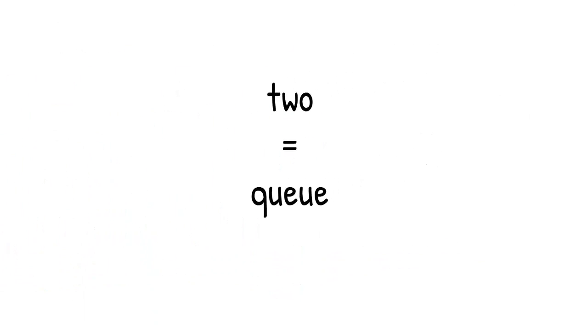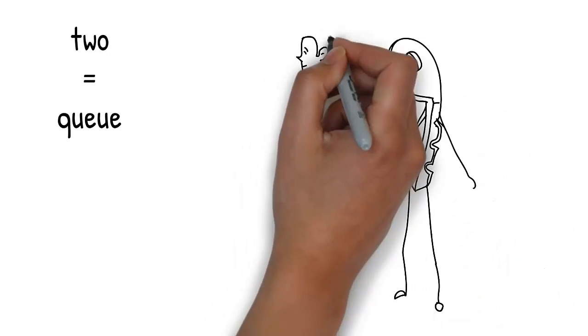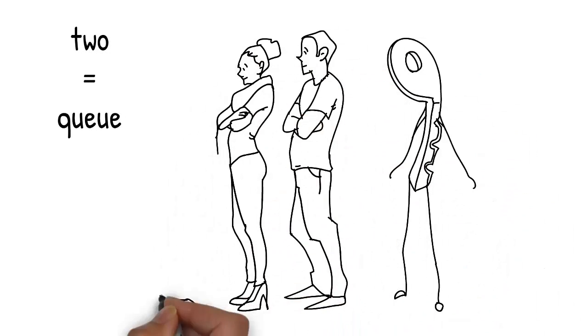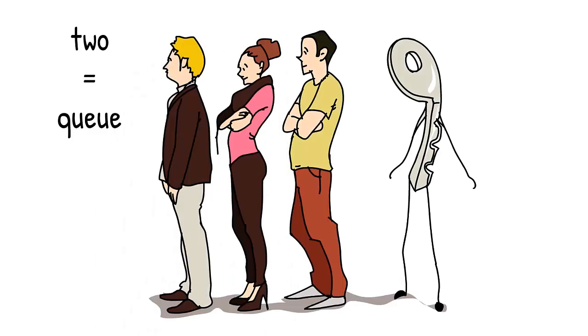The key grows arms and legs and joins a queue of people lining up. Q rhymes with 2.